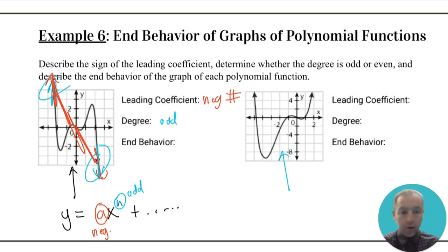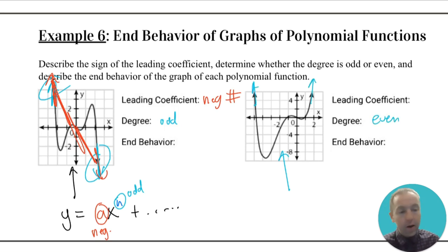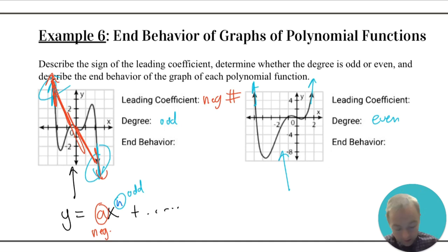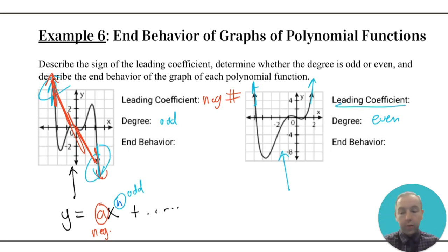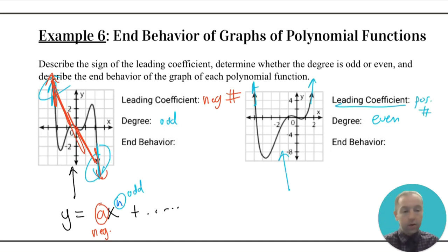For a polynomial where both ends point in the same direction, the degree must be some even number like 2, 4, 6, or 8. Because both ends point upward, the leading coefficient — the number multiplying the term with the highest exponent — has to be a positive number. So the leading coefficient is some positive number.